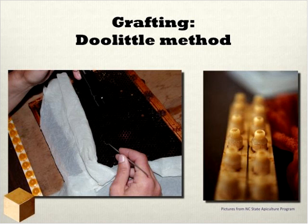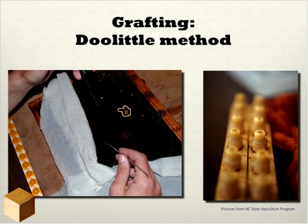The standard way many beekeepers raise queens is through the grafting method called the Doolittle method — the physical transfer of young worker larvae from worker cells into queen cup cells placed into the queen-rearing colony. The bees then provision those larvae with royal jelly and they develop normally as queens. This is a very common practice by which most commercial queens are raised.